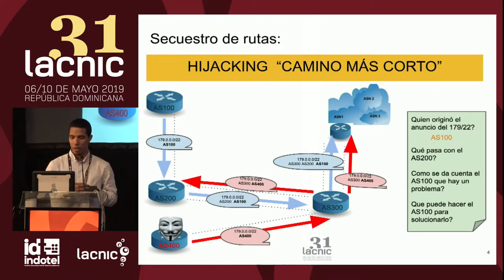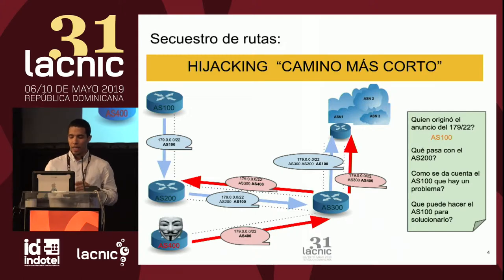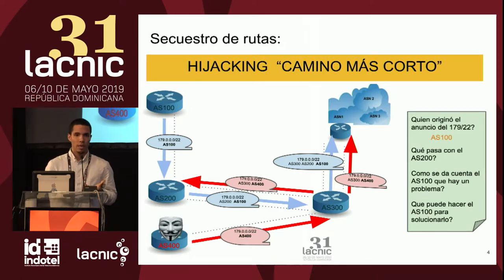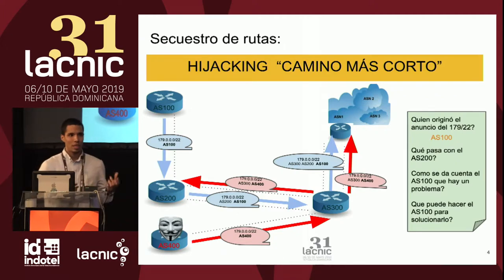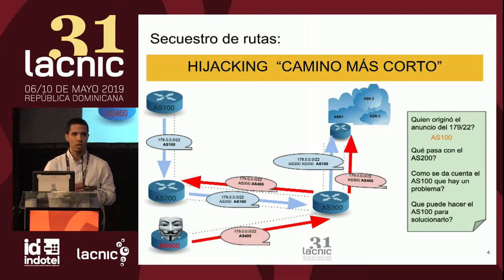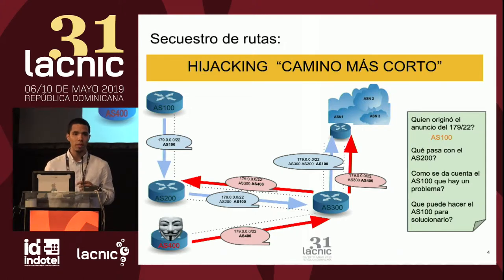¿Qué otra forma puede el AS100 darse cuenta de que está sufriendo un secuestro de rutas? Si el tráfico del AS200 es significativo hacia el AS100 y él está monitoreando su tráfico, va a detectar una baja en este tráfico. Otra opción es que si el AS200 toma este anuncio y lo propaga, el AS100, igualmente monitoreando su tráfico, va a poder ver que hay un anuncio con su prefijo pero con el AS del atacante.